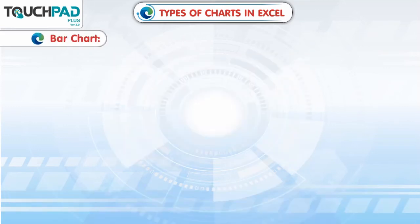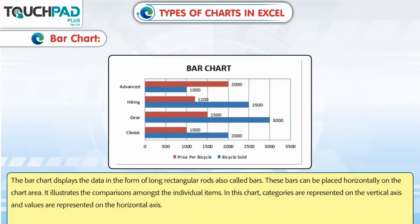Bar chart: The bar chart displays data in the form of long rectangular rods, also called bars. These bars can be placed horizontally on the chart area. It illustrates comparisons amongst individual items. In this chart, categories are represented on the vertical axis and values are represented on the horizontal axis.